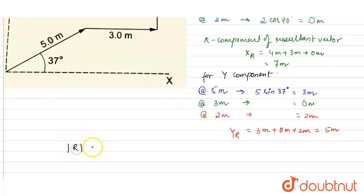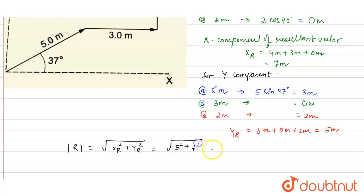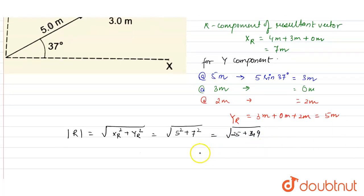The magnitude of the resultant vector equals √(Xr² + Yr²) = √(7² + 5²) = √(49 + 25) = √74 ≈ 8.6 meters. This is the magnitude of the resultant vector.